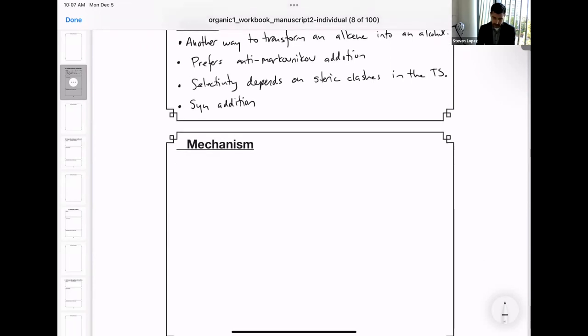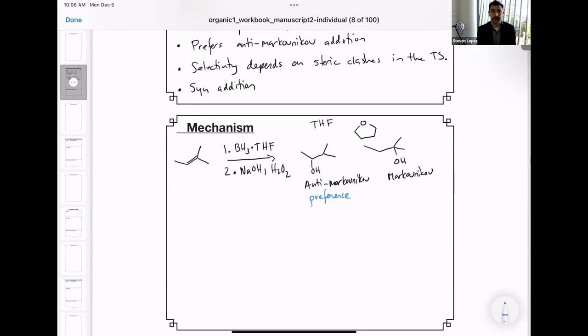So suppose you had this alkene that I show here in the presence of borane, BH3, complexed to THF, that's a solvent, followed by the addition of sodium hydroxide and hydrogen peroxide. When you do this reaction, you get a mixture of products. You get the anti-Markovnikov addition and the Markovnikov product, and there's a preference for the anti-Markovnikov product. Let's explore why.